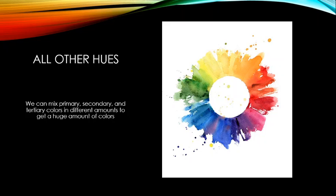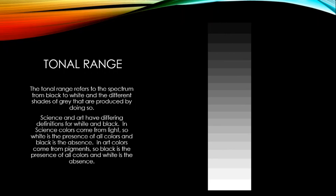Beyond primaries, secondaries, and tertiaries, we can mix hues at all different varying levels to get a huge range of colors and tones — for example, adding just a little red to blue gets you a color leaning toward purple.